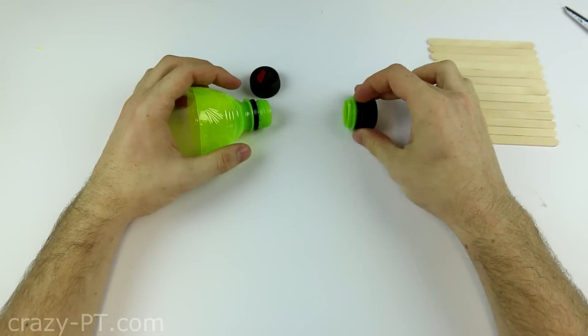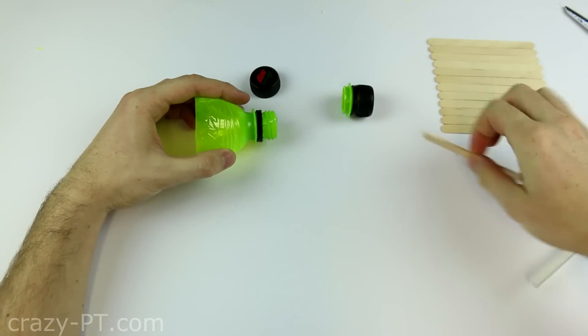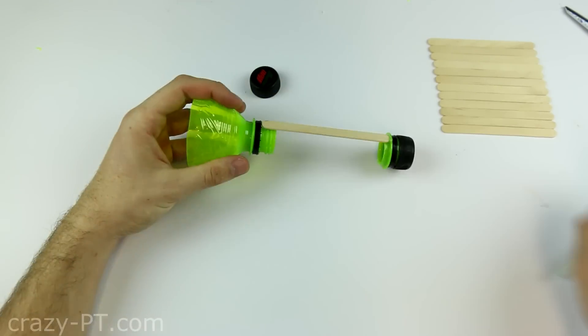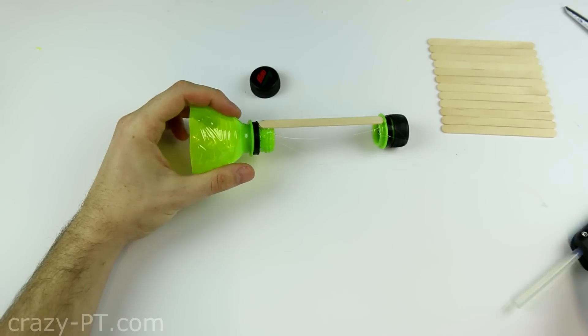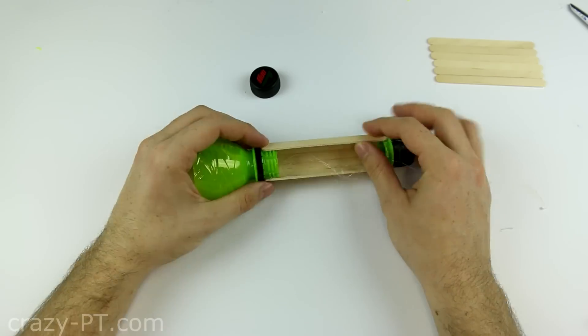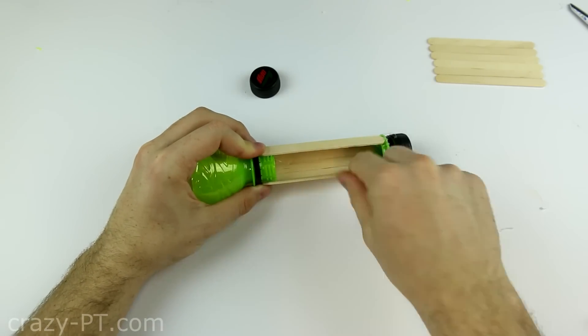And screw the cap off and glue 7 lolly sticks around using a glue gun. Now just take right off the excess glue.